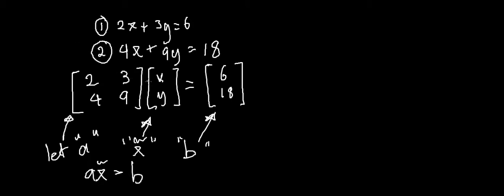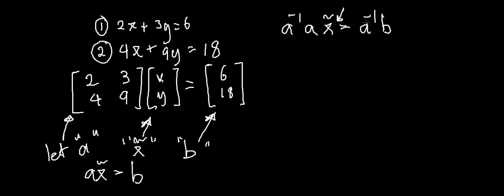...then what we have is A times x-squiggle equals B. To work out what x-squiggle is — that's what we want on its own — we have to take A inverse of both sides. It's very important that we multiply A inverse in front on both sides, just like normal algebra. If A was on the other side of x, we'd multiply to the back. But since it's in front, our A inverse and A cancel out, leaving us with x-squiggle equal to A inverse times B.